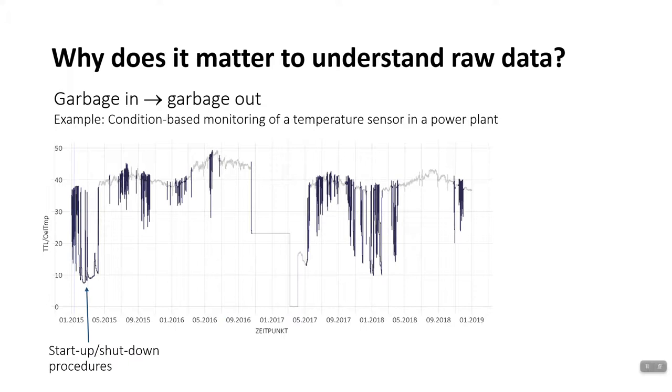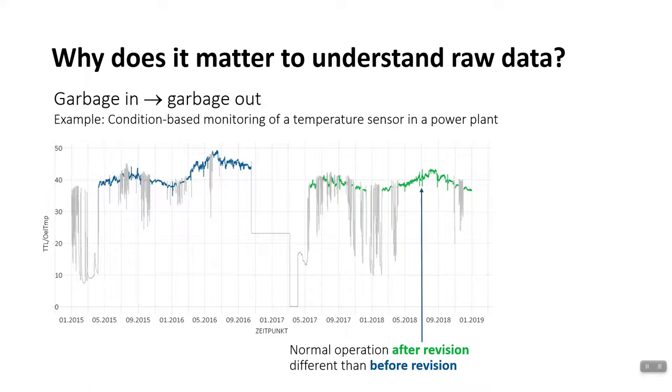The spikes are turbine startups and shutdowns. And even from the rest of normal operation, only the time after the revision is usable, because the process behavior has changed as a result of the revision. This means that before using data for analytics, you have to be able to interpret it and select it appropriately.